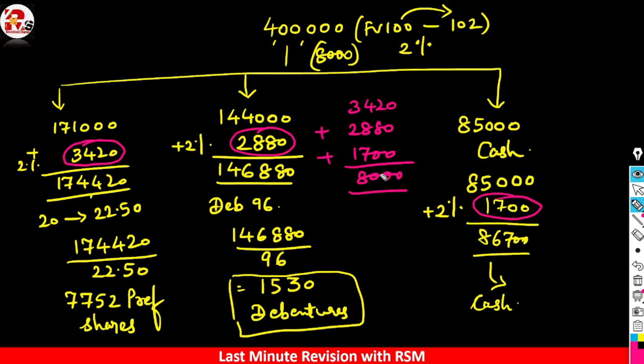Once you prepare this working note properly, the remaining journal entries and other parts you can read and write. The key is knowing how to build the working note. With any type of amounts or calculations, if you can comfortably build this working note, it will be very easy to solve all questions on redemption of debentures by conversion. I hope this concept is clear. If this video helped revise your concepts, don't forget to like, and subscribe to the channel for more informative and learning videos. Thank you very much, bye bye, take care.